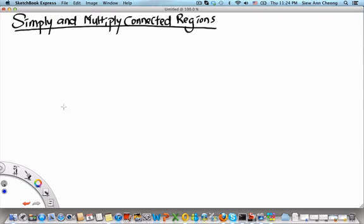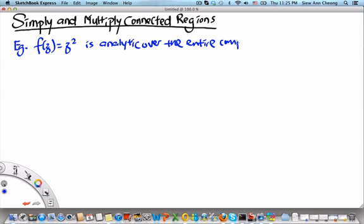Now, why do we need to do something like that? For example, a function like f(z) = z² is actually analytic over the entire complex plane.